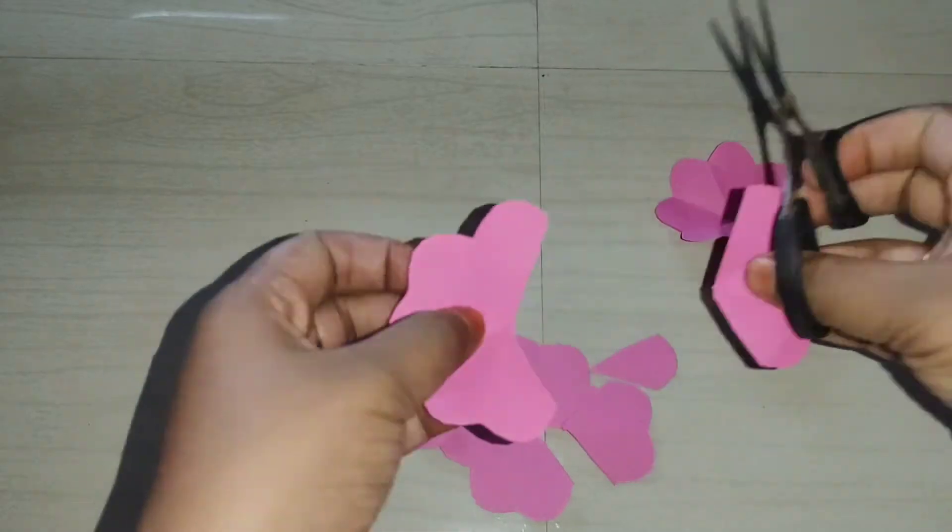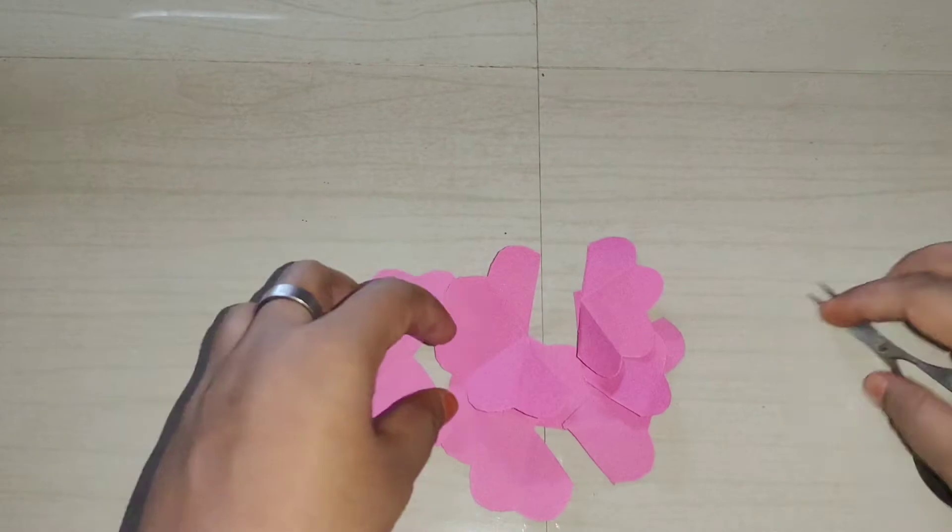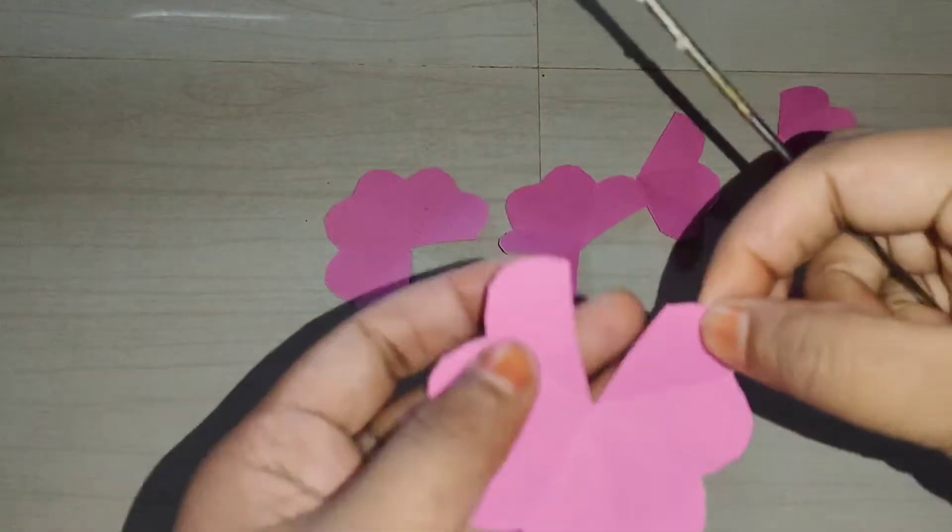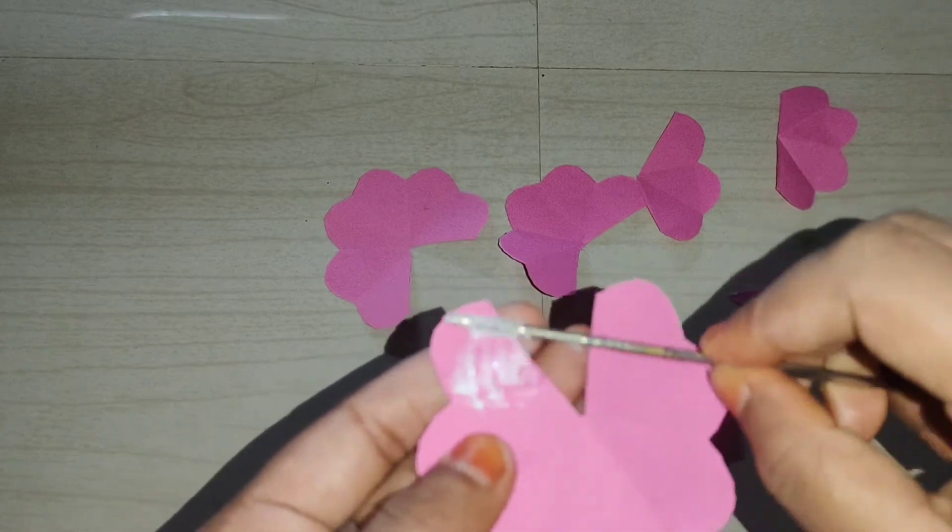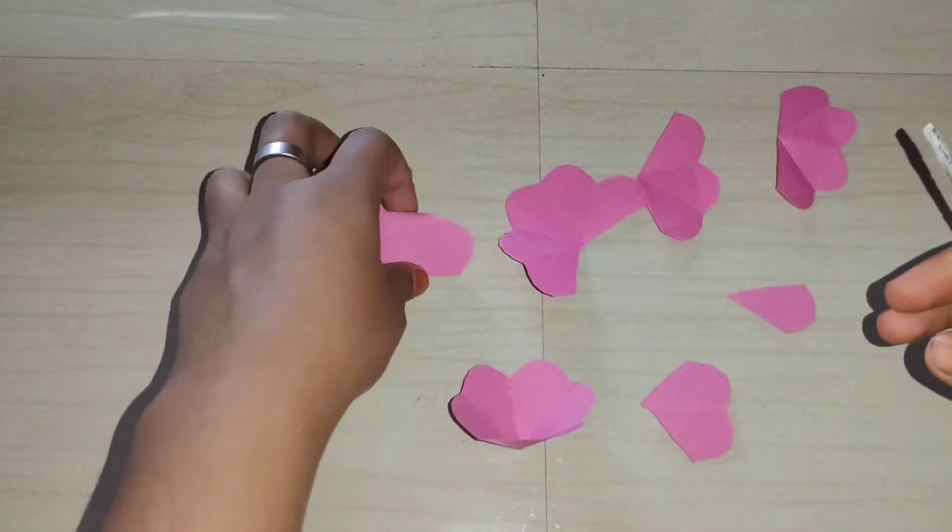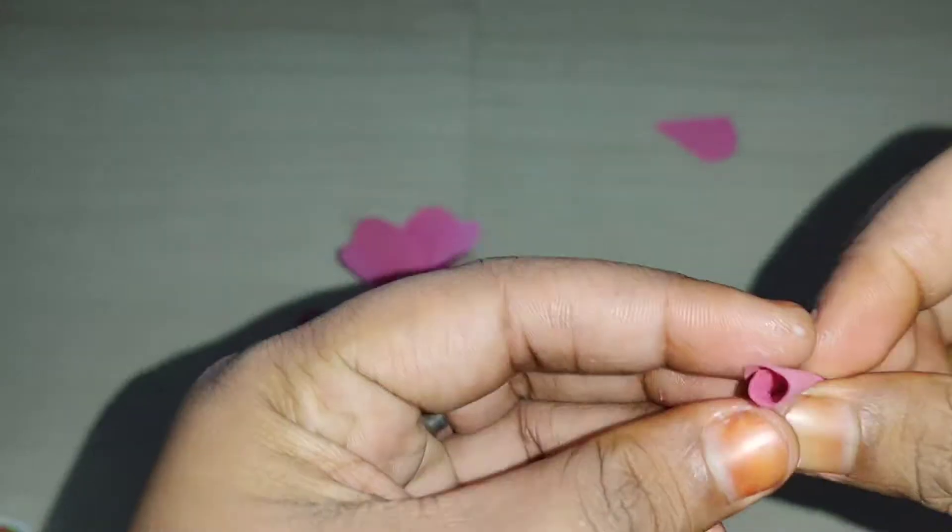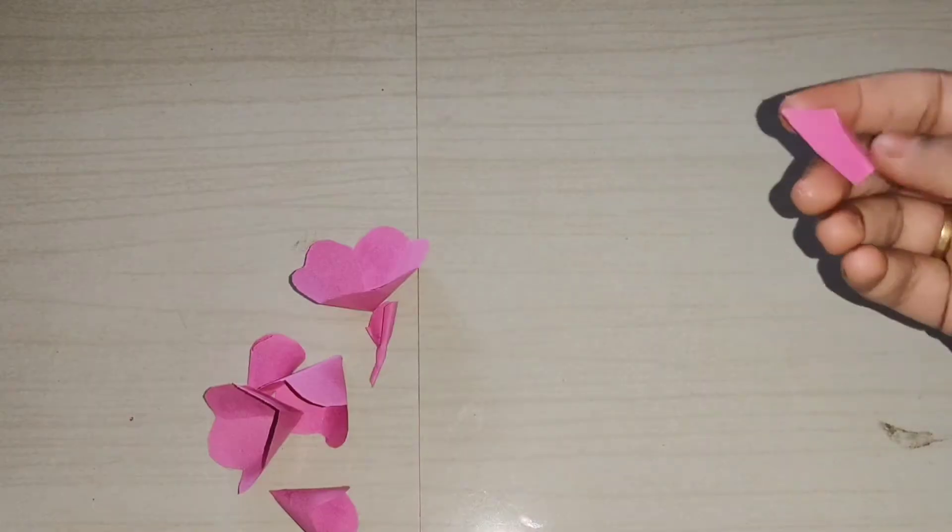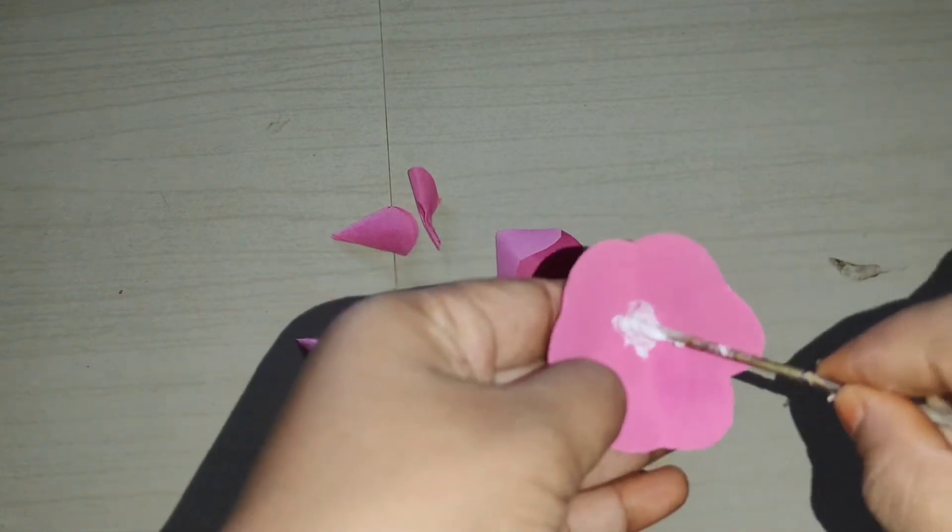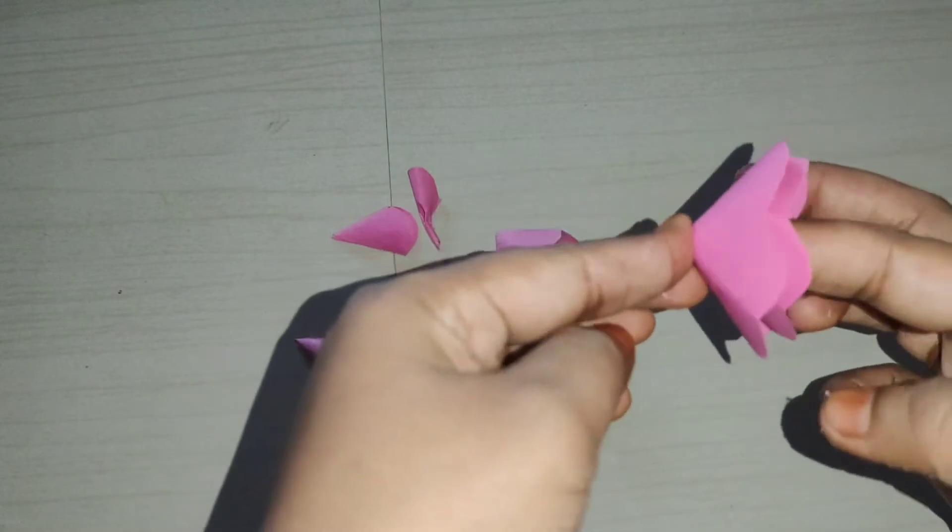Add one piece to the flower, add one piece to the flower. Two pieces. One piece is made, it will be made.